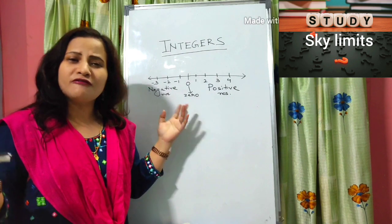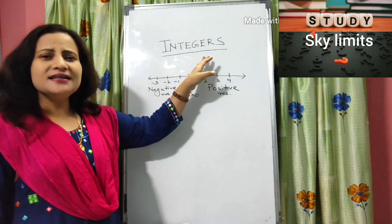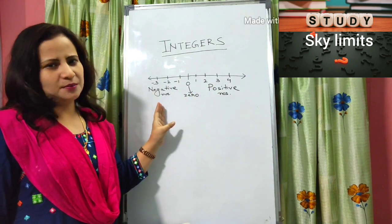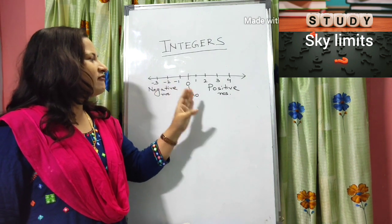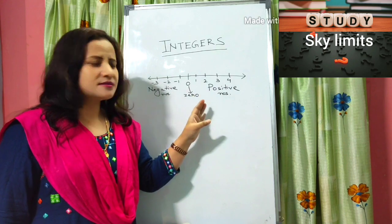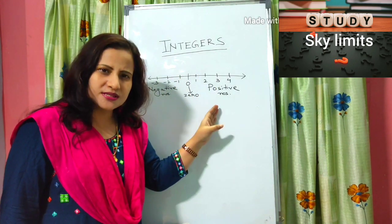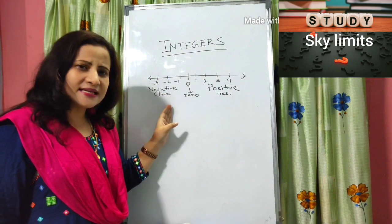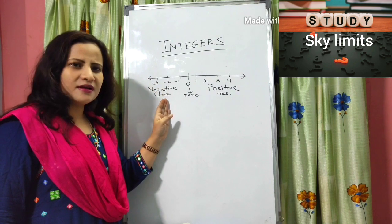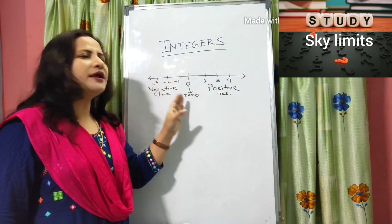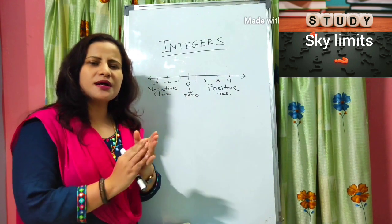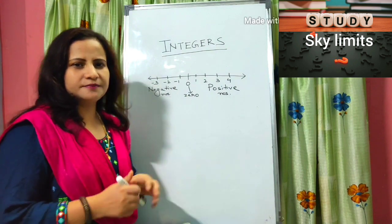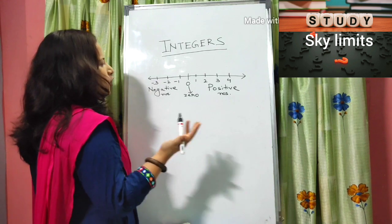Basically, the word integers is composed of three types of numbers: the positive numbers, zero, and the negative numbers. You have been acquainted with the positive numbers very well — the numbers which are greater than zero are considered to be positive. The numbers which are less than zero are considered to be negative. So integers is a set consisting of numbers that are negative, positive, and including zero. Zero is neither positive nor negative.